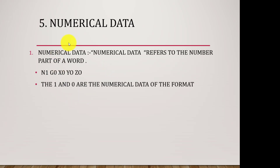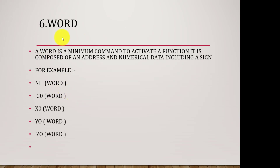Numerical data refers to the numbers part of a word. Numbers like 1 and 0 are numerical data. Next is word. A word is a minimum command to activate a function; it is composed of an address and numerical data. For example, N1 and G0 are words, as are X0 and Y0 — the combination of an address and numerical data is called a word.